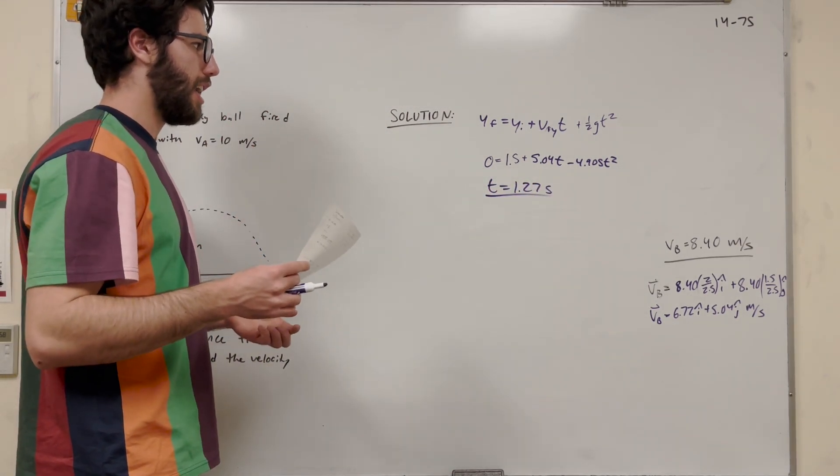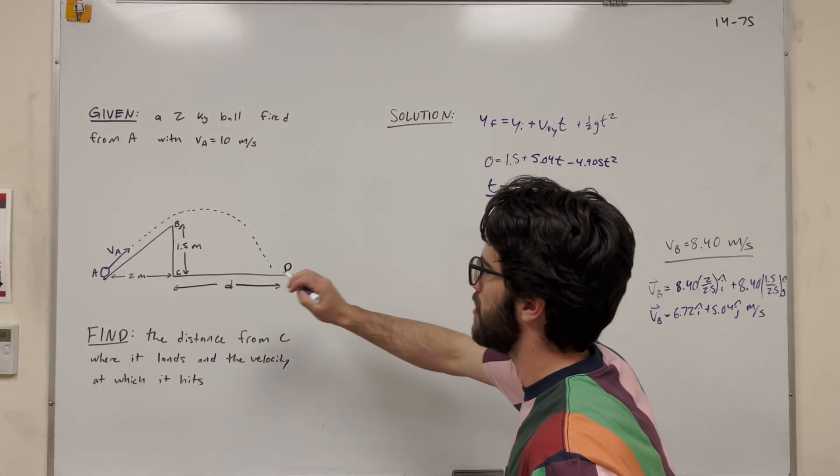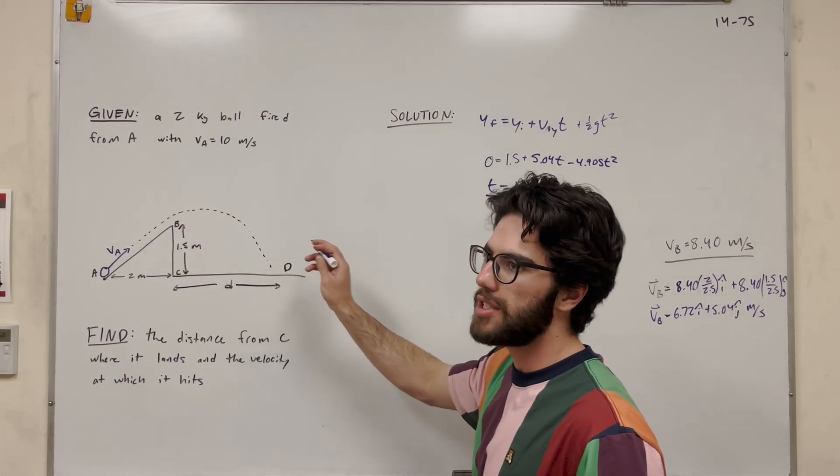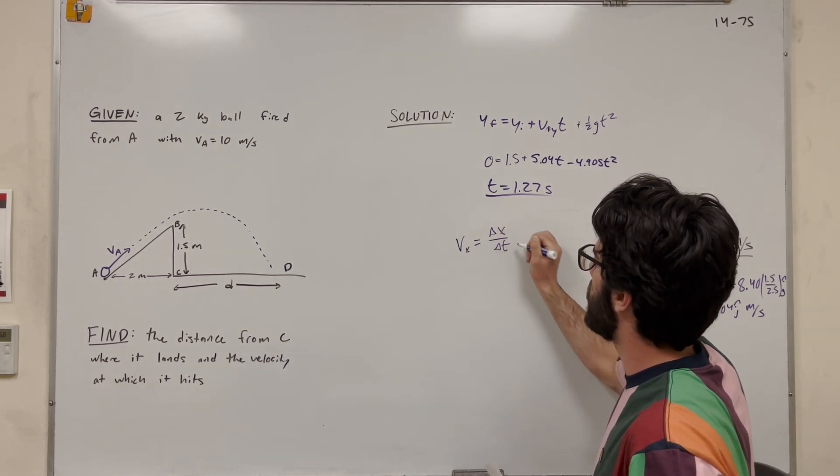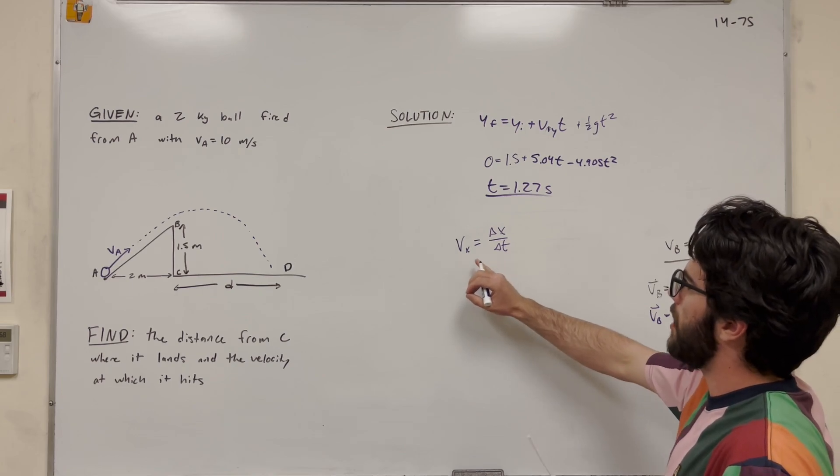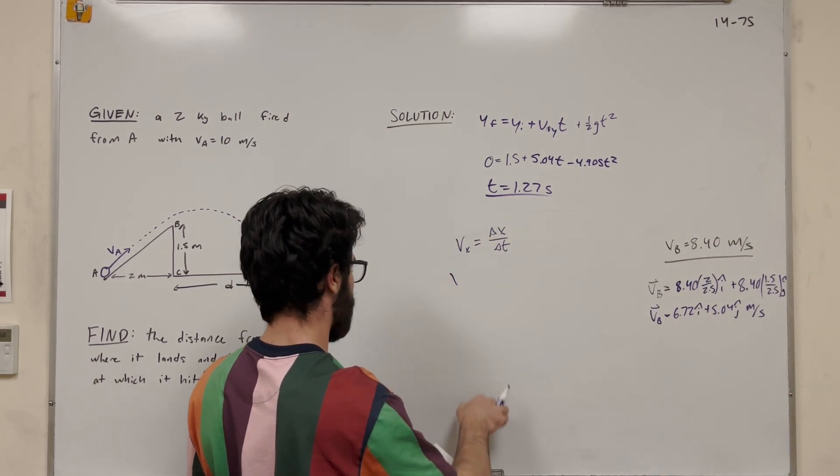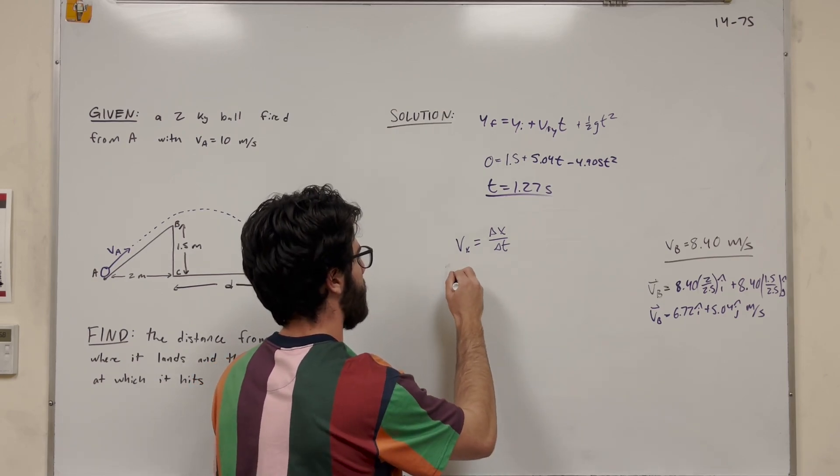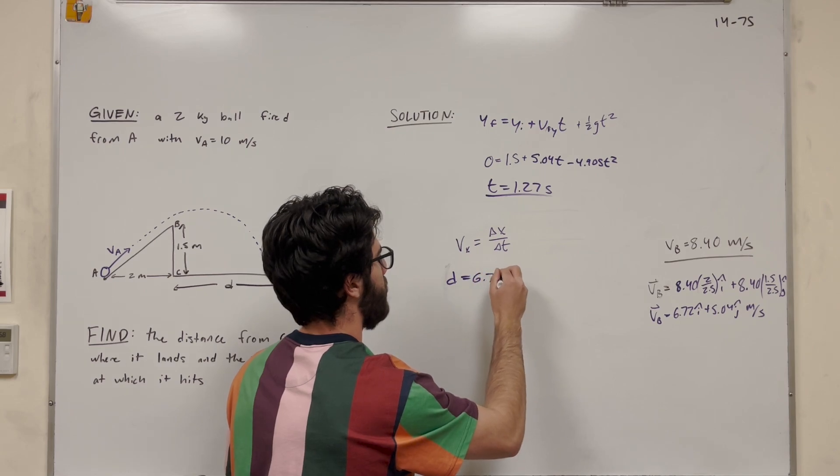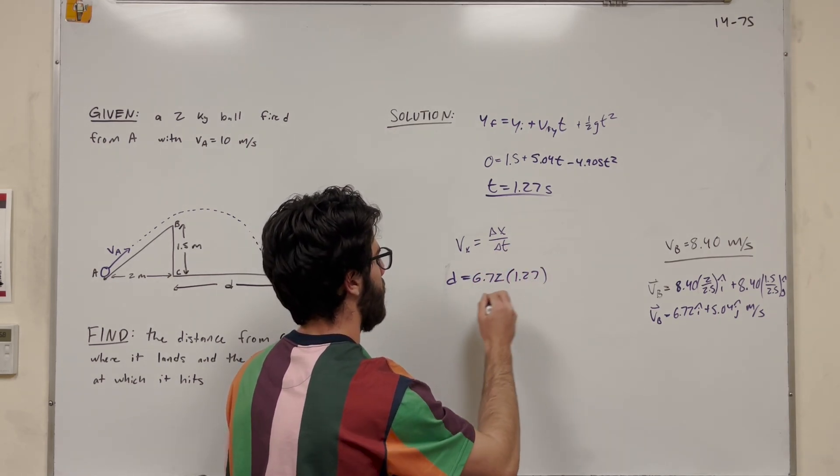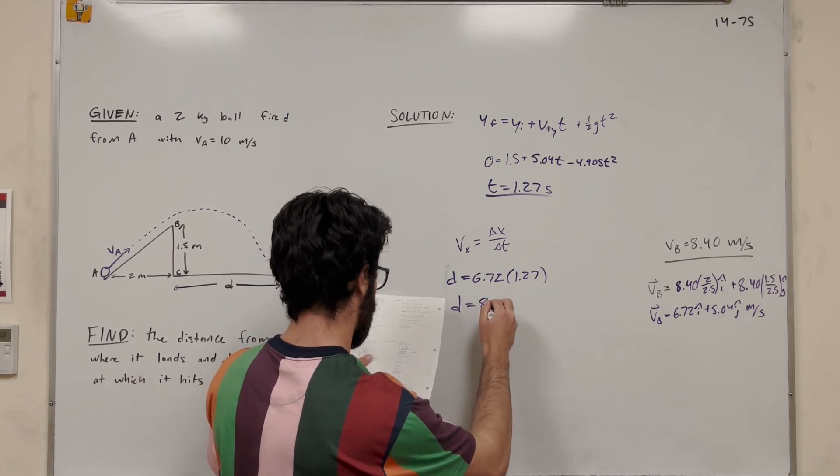So then we found the time. So we want to find distance traveled. We know that velocity in the x direction is going to be constant. So we can use the equation velocity in the x is equal to change in x over change in time. So now we know change in time and we know velocity in the x from this vector equation here. So delta x is the same as d. So we can say that distance is equal to velocity x, 6.72 times time, 1.27. We're going to find that distance is equal to 8.53 meters.